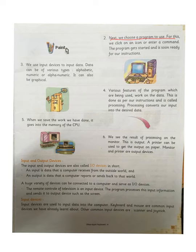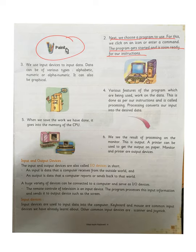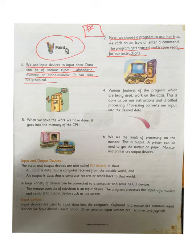Step two: we choose a program to use — for example, Paint or Wordpad. We click on an icon or enter a command, the program starts, and it is ready for an instruction. Step three: we use input devices to input data. Data can be alphabetic, numeric, alphanumeric, or graphical. For example, we draw something in Paint or type in Wordpad using the keyboard or mouse.